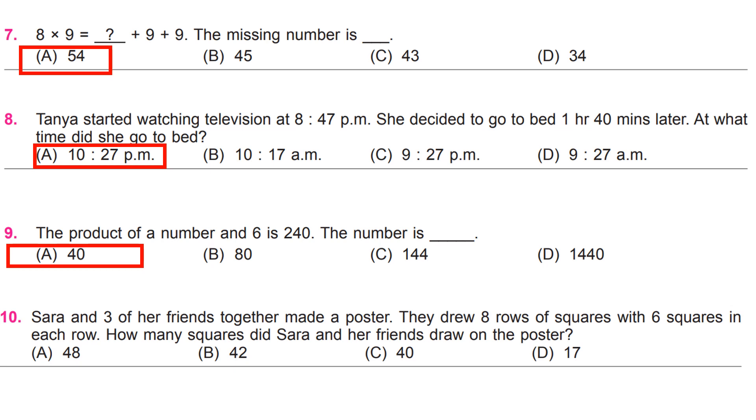Sarah and three of her friends together made a poster. They drew eight rows of squares with six squares in each row. How many squares did Sarah and her friends draw on the poster? A, 48.